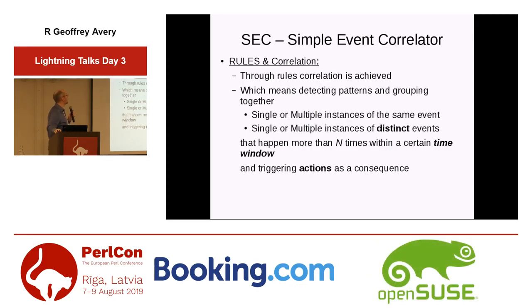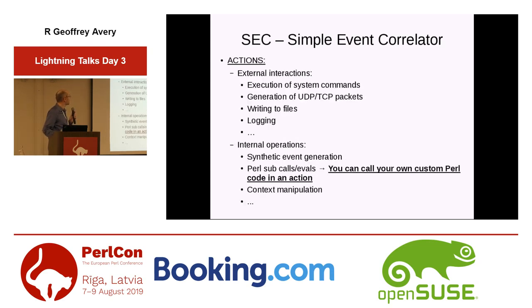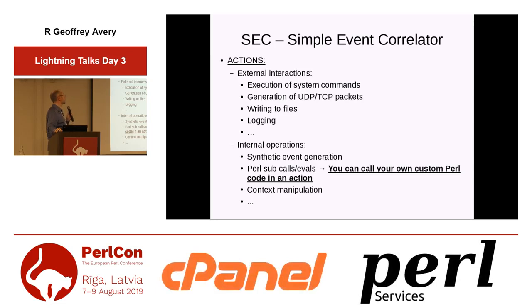Through rules you can achieve correlation, which means detecting patterns and grouping together single or multiple instances of the same events, or distinct events that happen more than a certain number of times within a time window. When that happens, you can trigger actions. Actions are of two kinds: external interactions with the system such as executing system commands, sending data over the network, or writing to files; or internal operations like generating synthetic events that cascade through the rule engine.